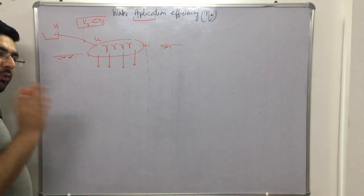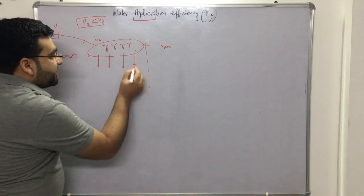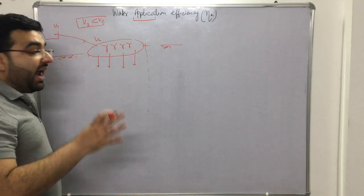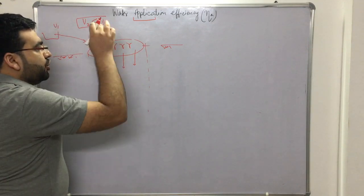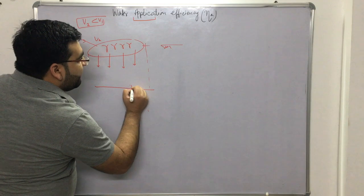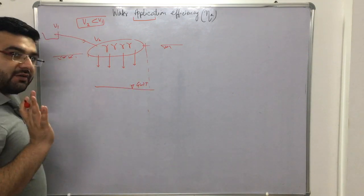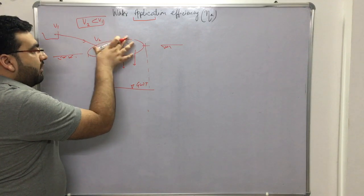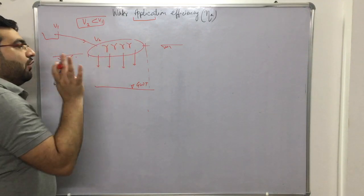What happens is that some water will be retained by the soil, and some water will percolate due to the force of gravity and join the groundwater table. So whatever volume arrived at the field, not all of it is held by the soil.